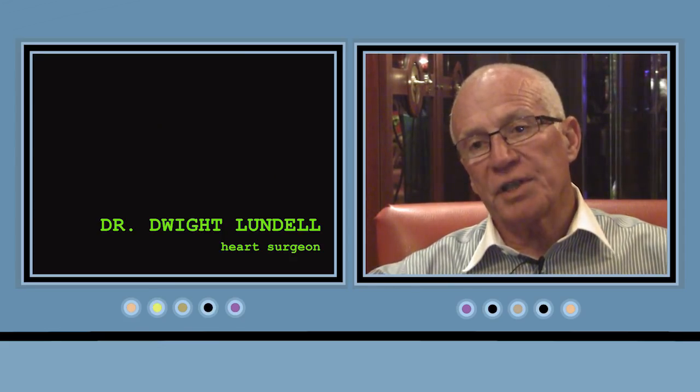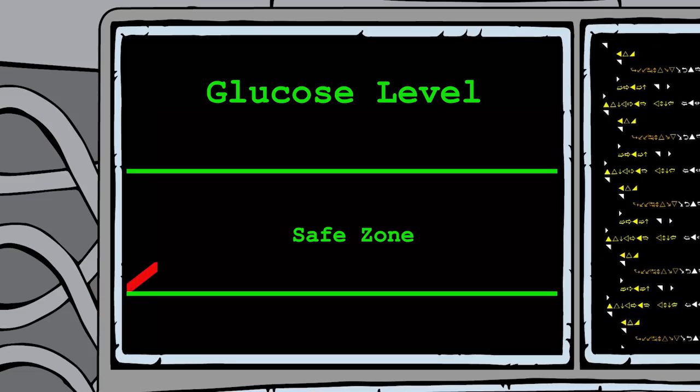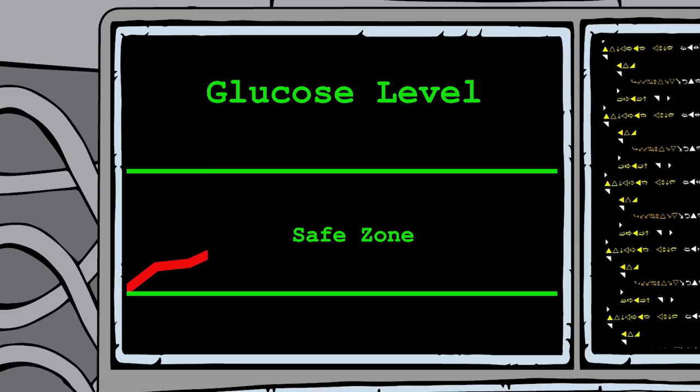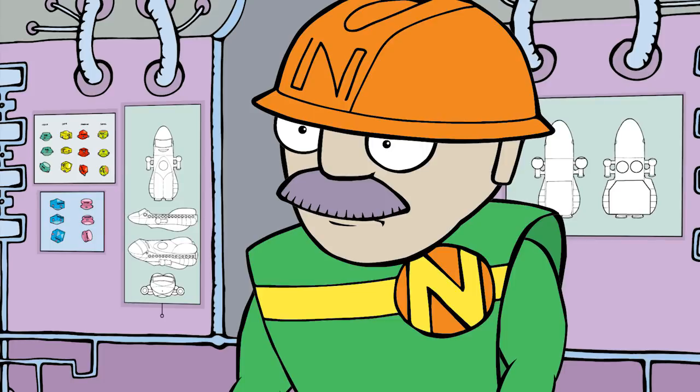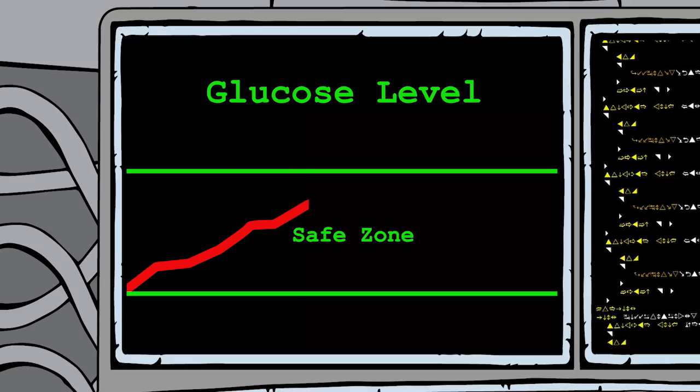Almost all of our degenerative diseases are related to the damage that's done by excess glucose. Keeping the glucose level from going too high or too low is one of Marty's most important jobs. So let's see how he does it.